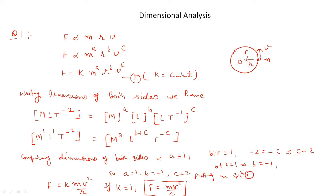Now we will write the dimensional formula for both sides. F is a force, so it has the dimensional formula M·L·T^(−2). K is a constant, so it equals 1 and we do not write it. M is mass, represented by M^A. R is distance, represented by L^B. V is velocity — displacement upon time — so it is L·T^(−1), and it is C times, giving L·T^(−1)^C.